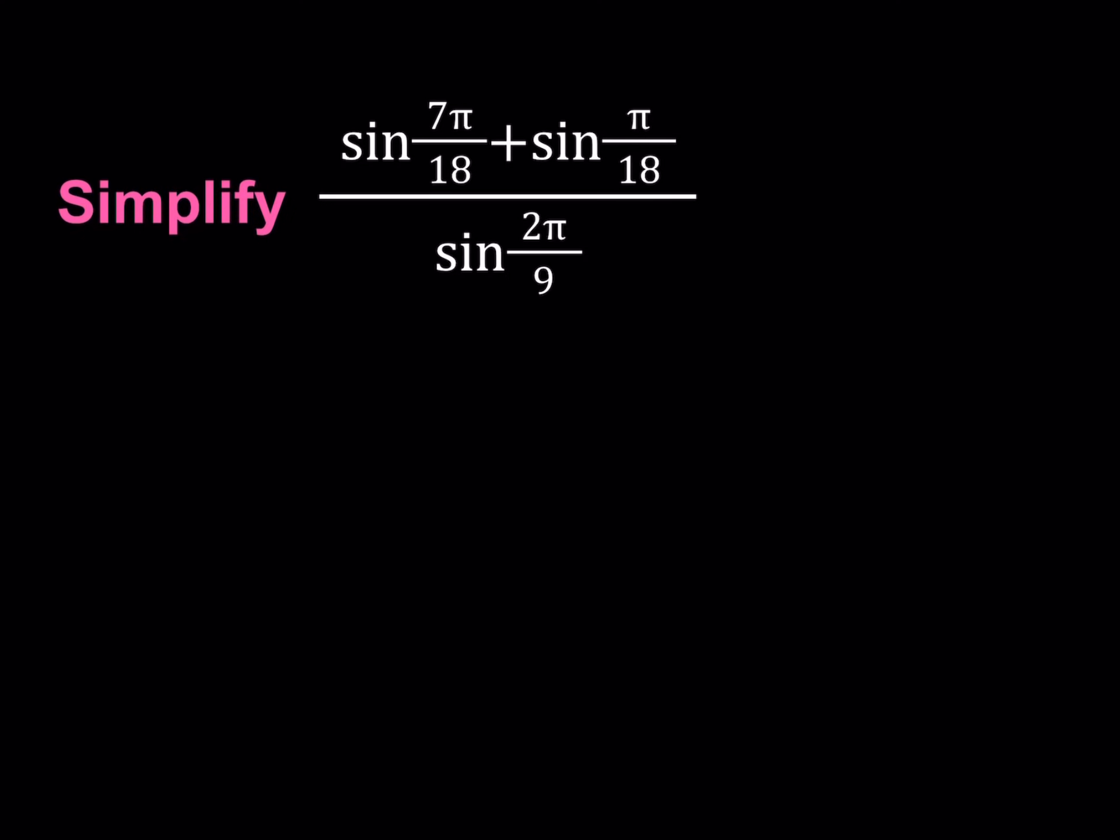So π radians is equivalent to 180 degrees, so this is going to be sine of 70 degrees plus π over 18. 180 divided by 18 is 10, so this is going to be equivalent to sine 10 degrees.